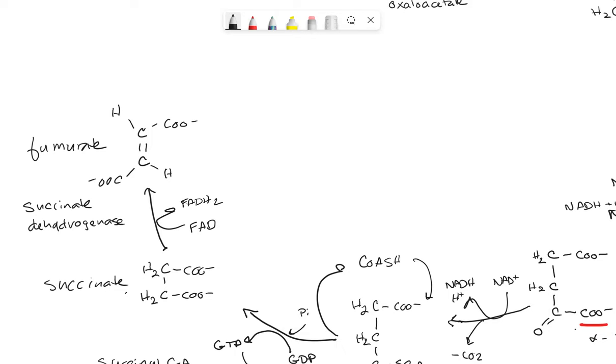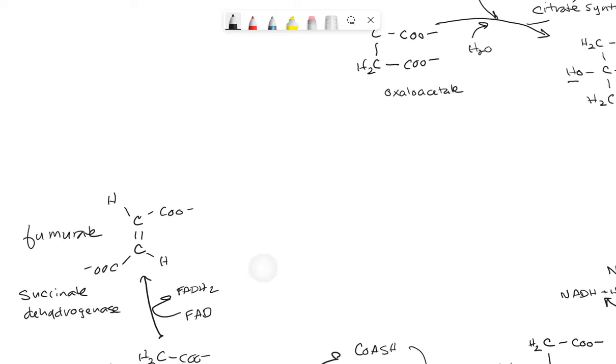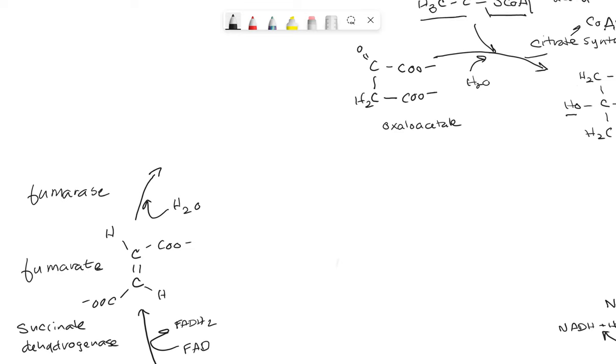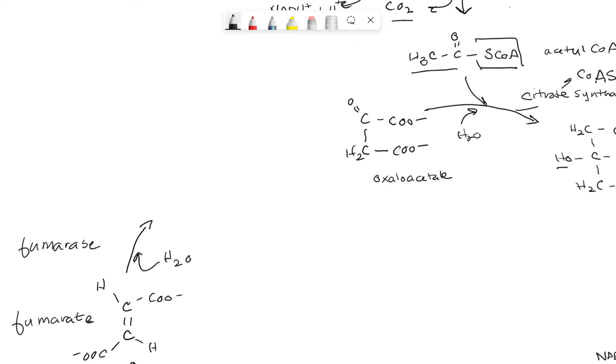FADH2 is going to feed into oxidative phosphorylation and electron transport, just like NADH does, but through a slightly separate route, which we'll get into in the following chapter. And now that we have fumarate, we're going to add water across our double bond using fumarase enzyme. So water is going to come in. And this is going to give one of my favorite compounds in the cycle, malate. By adding water across the double bond, we're going to get the following structure.